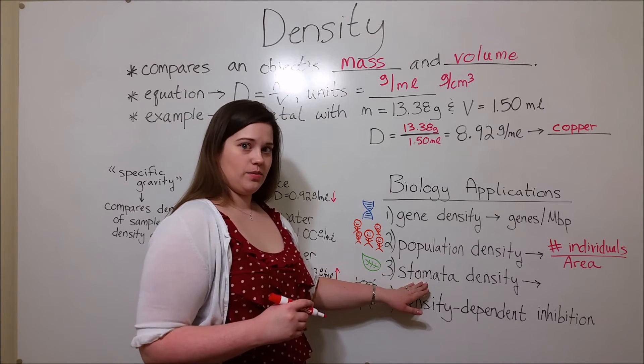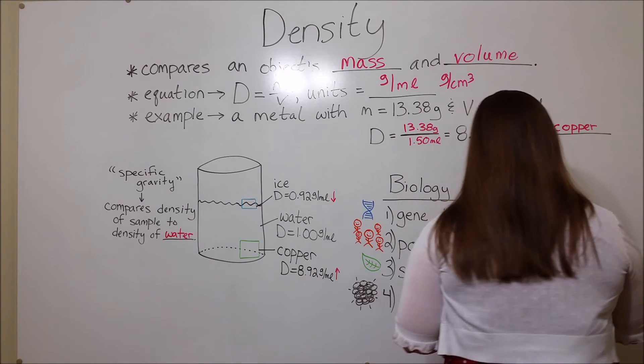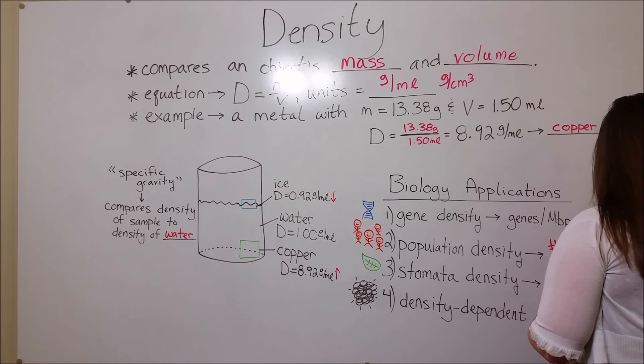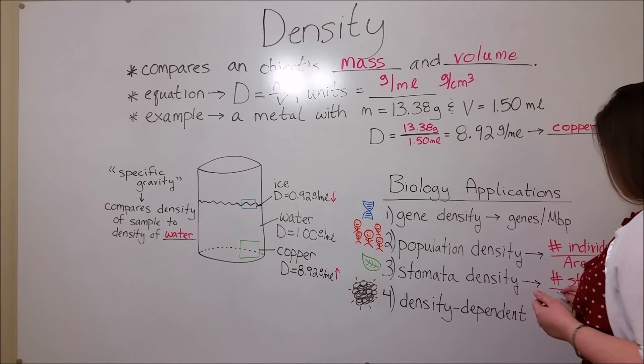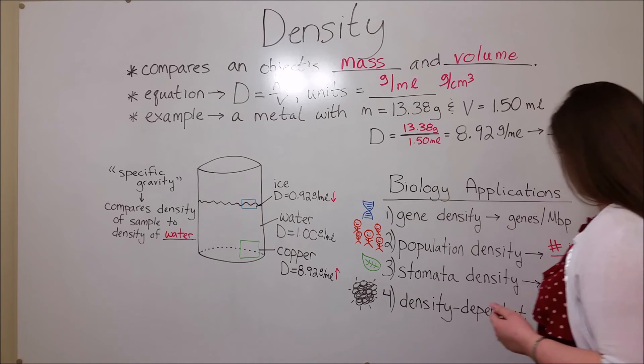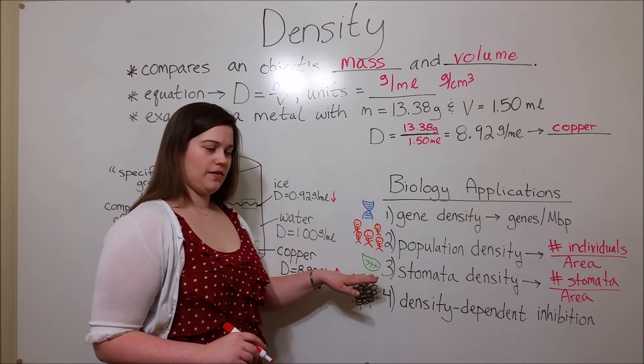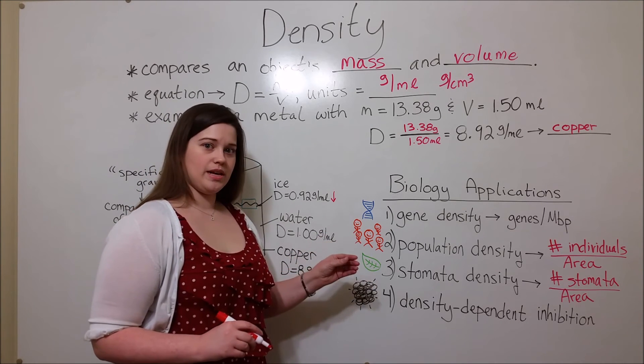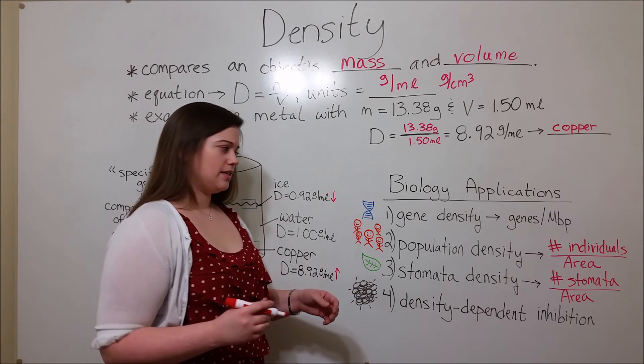Stomata density is another one - simply the number of stomata per unit of area on a leaf. Of course, stomata are those openings that leaves use to exchange gases during photosynthesis.